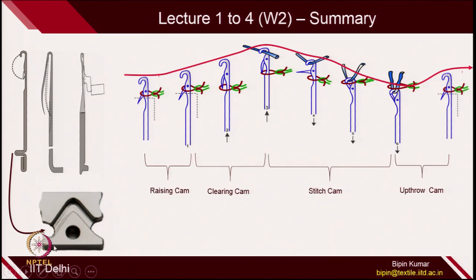We also checked the functioning of 2 other types of needle: the beard needle and the compound needle. Although these 2 are not that popular in weft knitting, so we restrict our discussion to the latch needle only. The cam has to be specifically designed to create a track, arranged using raising cam, clearing cam, stitching cam, and upthrow cam, so that each of these cams interacts with the butt at a specific time to perform the knitting function.